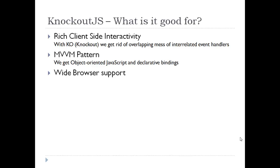It's very compact — close to 13 KB when gzipped — and it works on mainstream browsers starting from IE6. So what is it good for? Knockout.js provides rich client-side interactivity, and with this we get rid of the overlapping mess of interrelated event handlers. With the MVVM pattern — that is, Model-View-ViewModel — we get object-oriented JavaScript and declarative bindings.